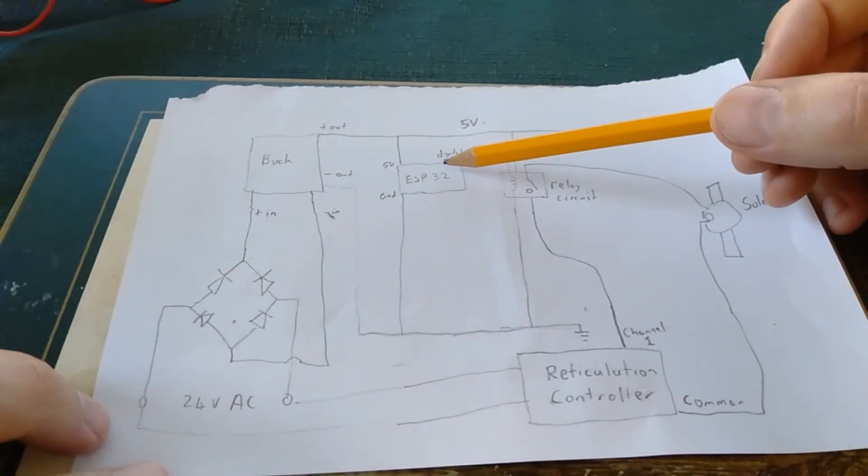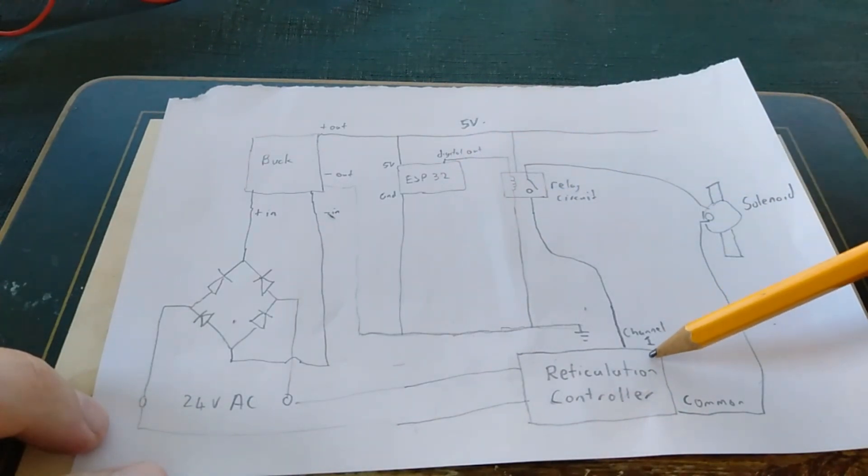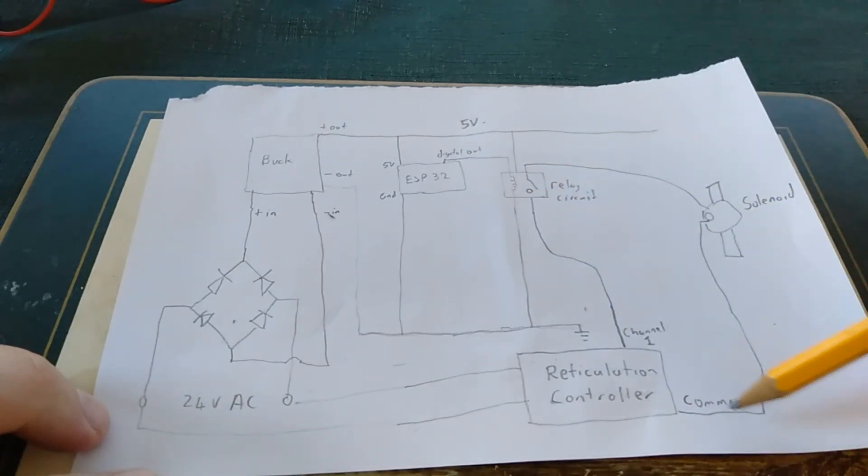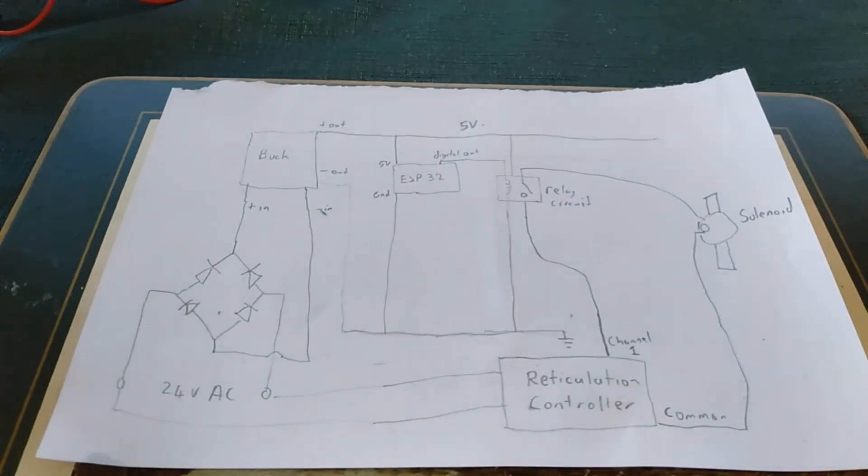Basically when the ESP32 digital pin comes on the relay will turn on, and if at the same time the reticulation controller has been turned on on channel 1, then we'll have 24 volts AC flowing out of here either interrupted by the relay or passed through by the relay to turn on the solenoid valve. That way we've got control over the solenoid from the ESP32.